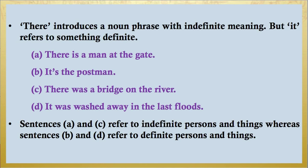For example: 'There is a man at the gate. It's the postman.' And: 'There was a bridge on the river. It was washed away in the last floods.' The sentences 'There is a man at the gate' and 'There was a bridge on the river' refer to indefinite persons and things. Whereas sentences like 'It's the postman' or 'It was washed away in the last floods' refer to definite persons and things. So, you see the difference now?